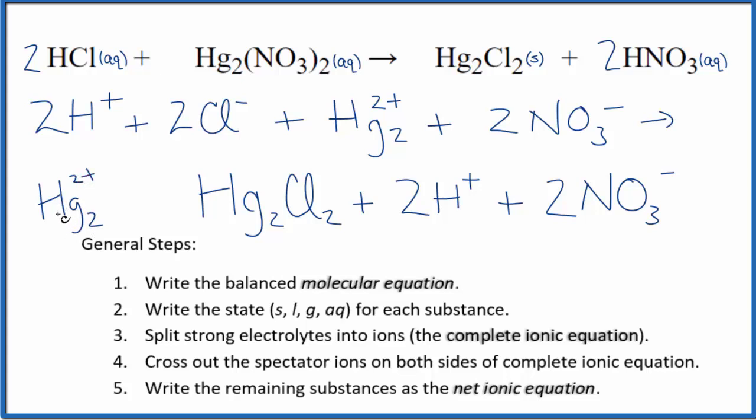So each one is one plus, but this stays together almost like a polyatomic ion. So we need to keep that together and have Hg₂²⁺ when we split this part into the ions here. So this is our complete ionic equation.